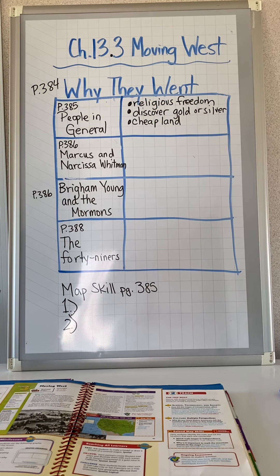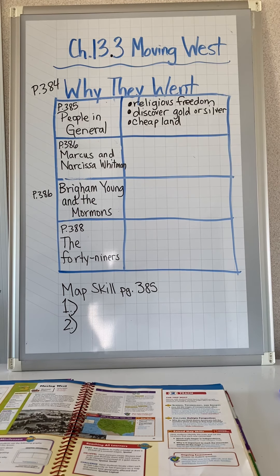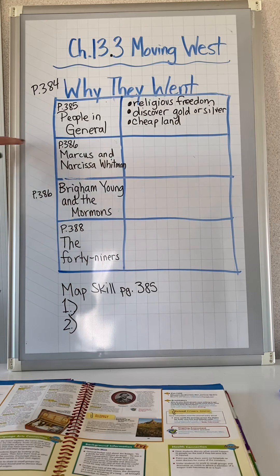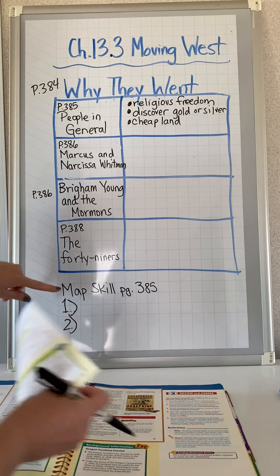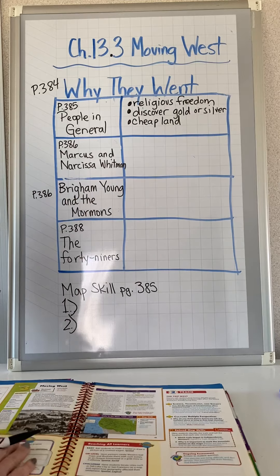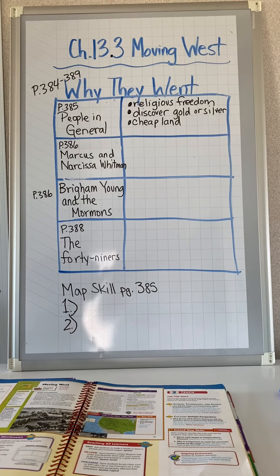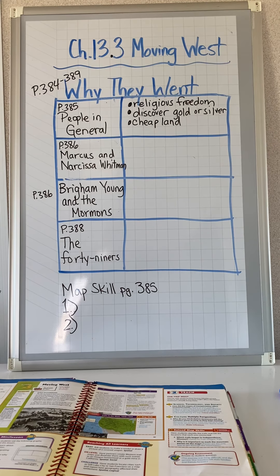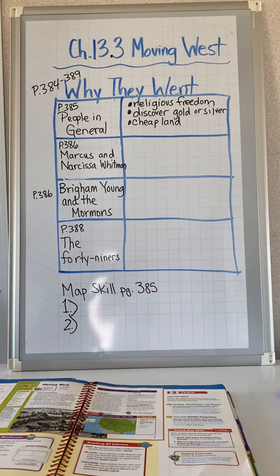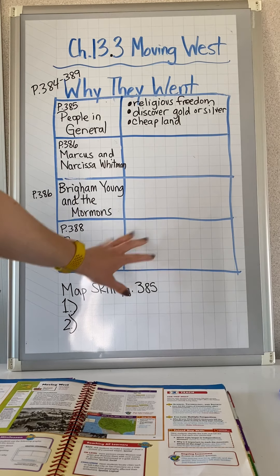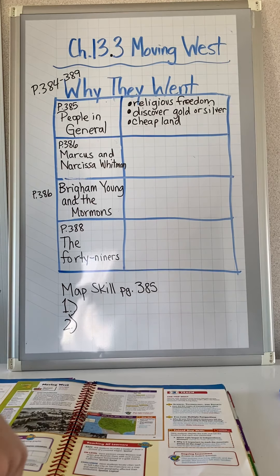Please make sure you read the rest of the lesson, going from pages 386 to 389. So the full lesson spans pages 384 to 389. For today, please finish reading and fill in why Marcus and Narcissa Whitman went west, why Brigham Young and the Mormons went, and then the 49ers. Fill that in, then do your map skill, and send me your work. Thank you, fifth grade.